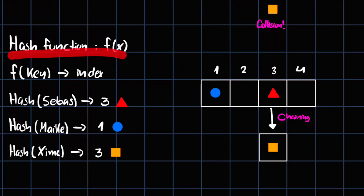So we have our hash function f(x), where x is going to be the keys we're putting in. The key is run through the hash function, and it returns a number — that number is the index where we are going to store the element. Within the element we have the key and the value.